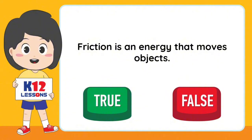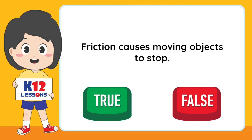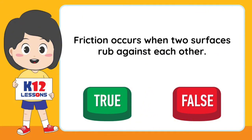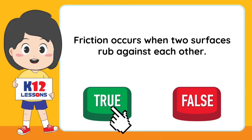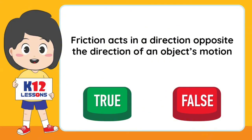Tell whether the statements are true or false. Friction is an energy that moves objects. Friction causes moving objects to stop. Friction occurs when two surfaces rub against each other. Friction allows objects to continue moving. Friction acts in a direction opposite the direction of an object's motion.